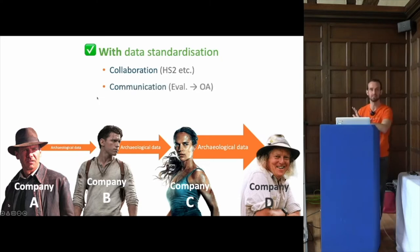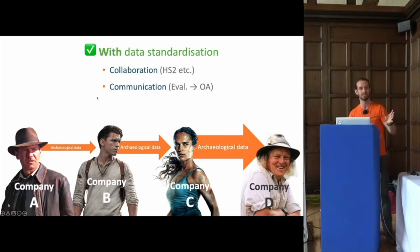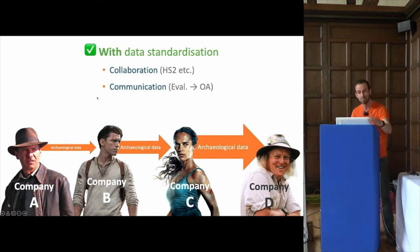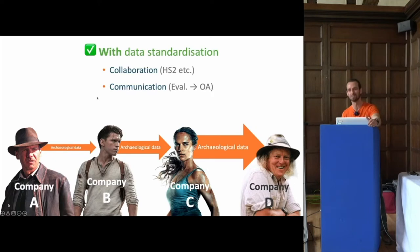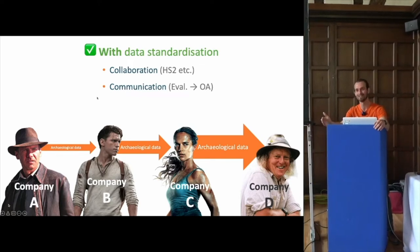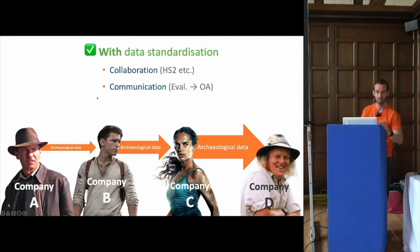Standardization also benefits communication. Everyone will have worked in a company where you've inherited an open area site from a different company doing the trenching evaluation. If that data was in the same format you use, it would make everything easier — getting started quicker and making sure you're not digging in the wrong place. A supervisor friend of mine once spent several weeks on a Roman site not finding many finds, until they got a significant small find at the bottom of a Roman pit — which was a 2008 prescription bottle. That's when they realized the area had already been archaeologically excavated by a different company. With standardized, easily accessible data, these kind of time-wasting situations just wouldn't happen.